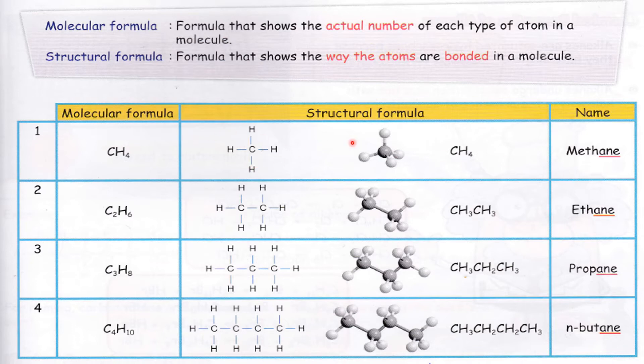You need to know the sequence of the carbon names: methane, ethane, propane, butane, pentane, hexane, heptane, octane, nonane, decane. Usually the question will not ask you more than octane.